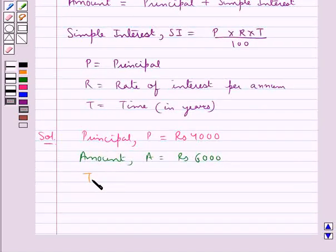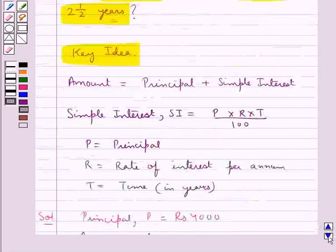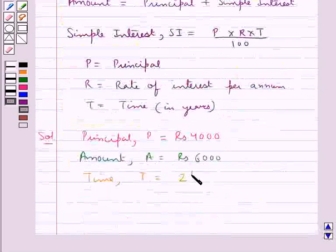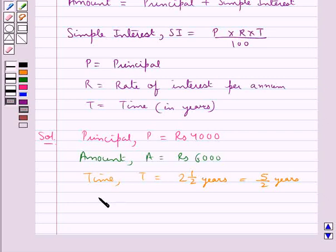Then the time T is 2½ years, or 5/2 years. Now we need to find the rate of interest per annum, that is R.